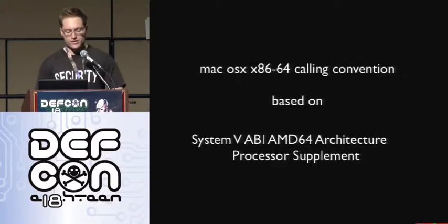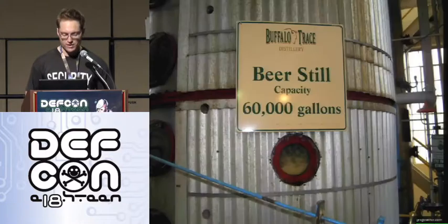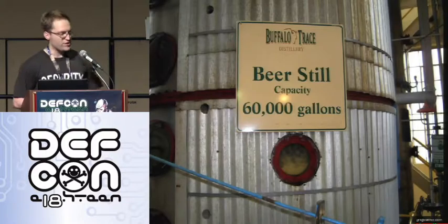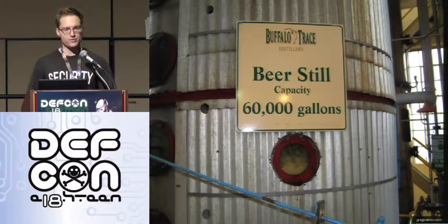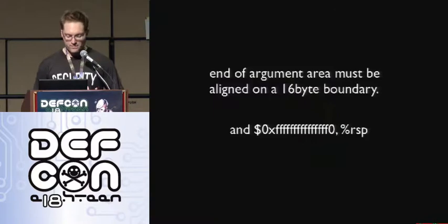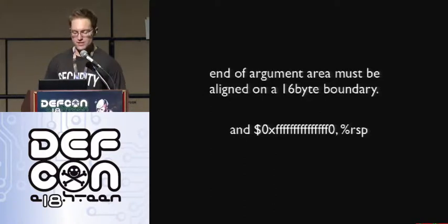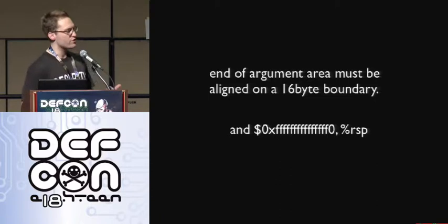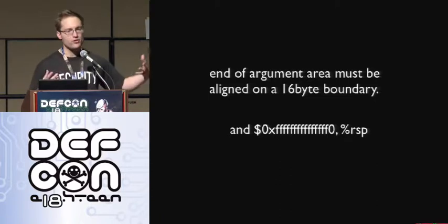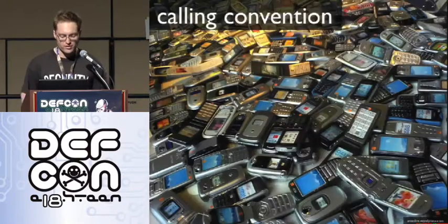Lucky for us, the x86-64 calling convention on OSX is based on the System V AMD64 ABI, so there's some overlap and we actually get saved a little bit. Instead of reading all this stuff, we can distill it down into the main things we need to accomplish the function hooking. The first thing we need to worry about is alignment. All we really care about for alignment in function hooking is that the end of the argument area before you call a function has to be aligned on a 16-byte boundary.